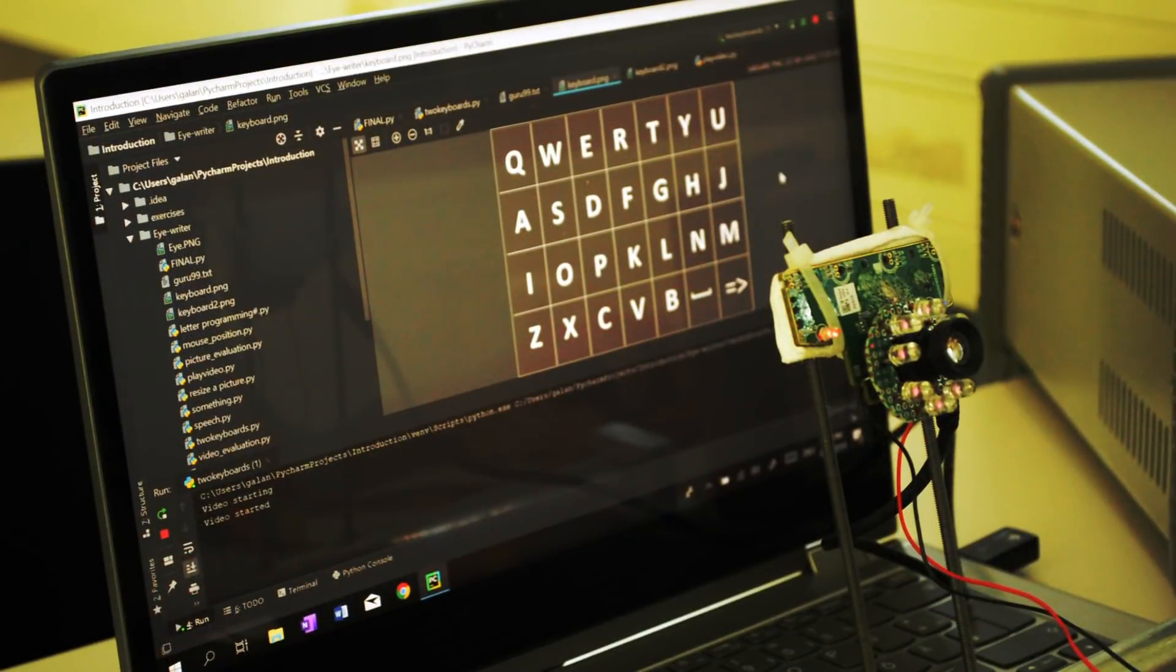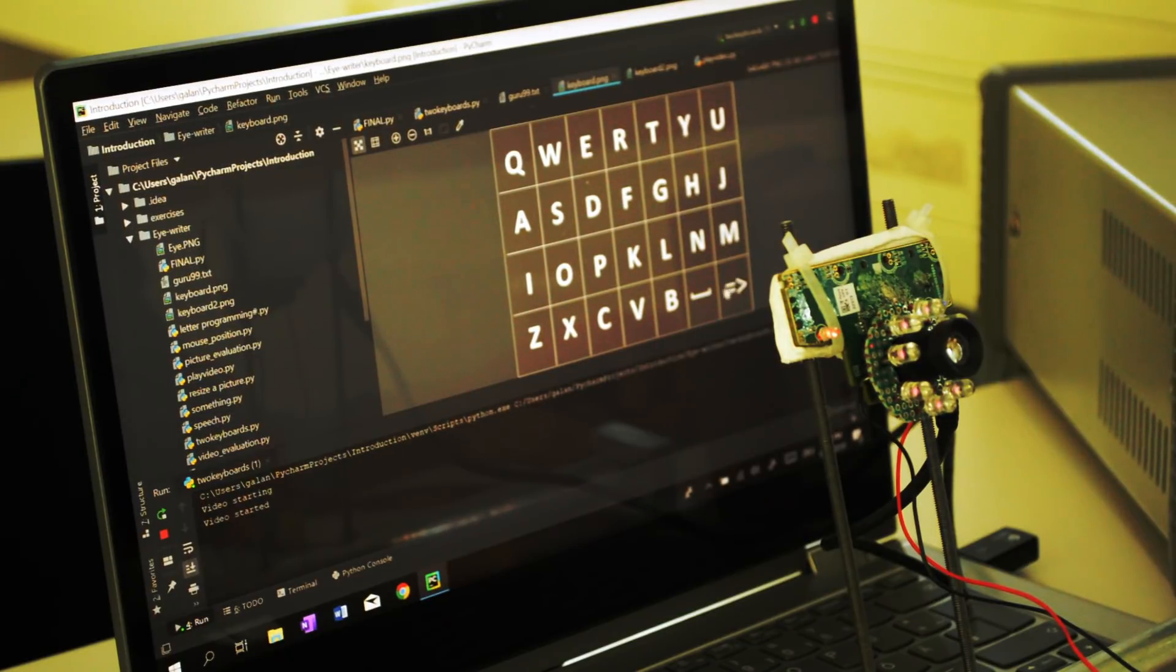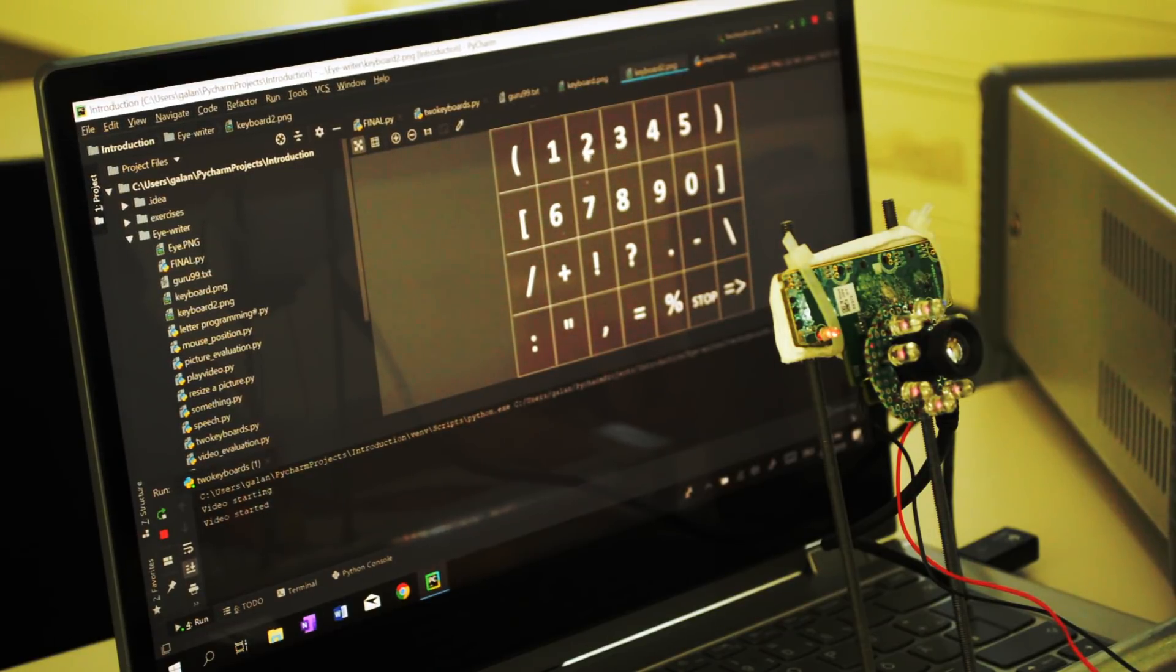There is one more important feature of our program. As you can see here we place an arrowhead down there. And if you blink on this mark then a second keyboard will come up which contains different numbers, special characters and symbols. So this is an additional feature of the program.